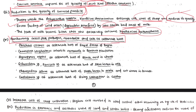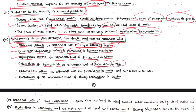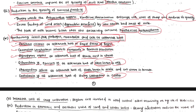Weeds harbor insect pests, pathogens, and nematodes, acting as alternate hosts. For example, Cenchrus ciliaris acts as alternate host for ergot disease in bajra; Commelina benghalensis harbors nematodes in banana plantations; Agropyron repens acts as alternate host for black rust of wheat; Echinochloa and Panicum species act as alternate hosts for stem borer in rice; Chenopodium album acts as alternate host for silk stalk borer in maize and cutworm in tomato; Crotalaria acts as alternate host for hairy caterpillar in castor.